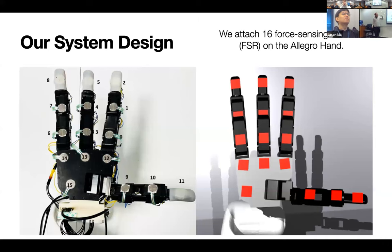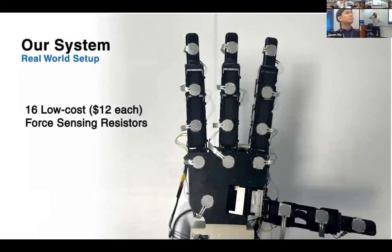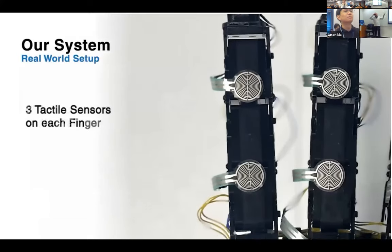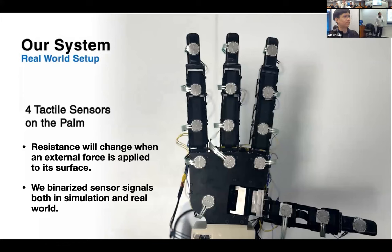What we did is use the Allegro hand — a standard hand from a Korean company — and attach FSR (force-sensitive resistor) sensors on top. We attach basically 16 of them. It's a very cheap sensor — search FSR sensor on Amazon, it costs maybe $10 to $12 each. It only senses normal force — how much pressure is applied. But we actually simplify it even further: we just binarize the signal. It's only about touching or not touching.